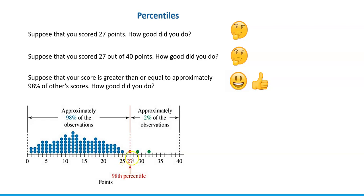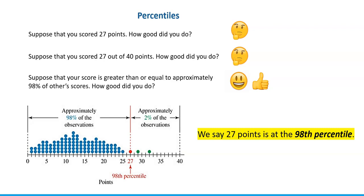This way of describing a certain data value — in this case 27 points — is called a percentile. When we know that 98% of other values are less than or equal to that score, this data value is called the 98th percentile. In general, if a data value corresponds to a specific percentile — like the 98th, 50th, or 75th percentile — it means that percentage of other observations are less than or equal to that value. That's percentile, another measure of position.